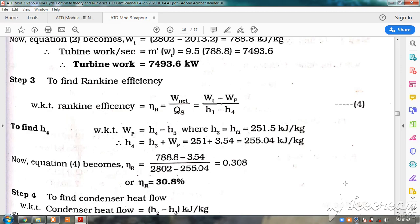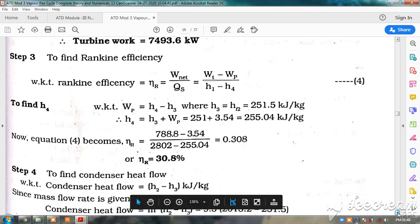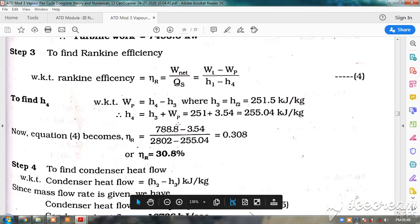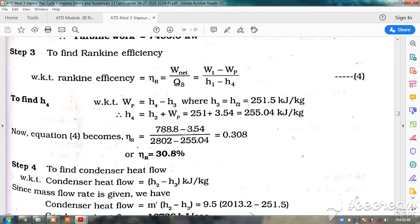That is 251 plus pump power 3.54 kilojoules per kg, so h4 is equal to 255 kilojoules per kg. Now substituting this in the equation, 788 is the turbine work, 3.54 is the pump work, this minus this divided by enthalpy at inlet 2802 and enthalpy at inlet to the boiler 255.